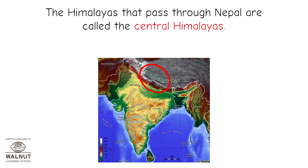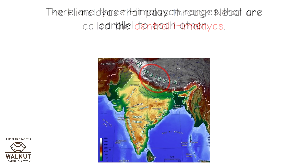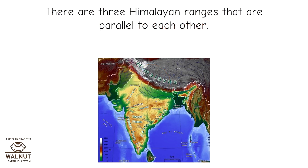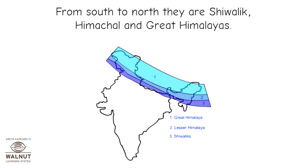The Himalayas that pass through Nepal are called the Central Himalayas. There are three Himalayan ranges that are parallel to each other. From South to North, they are Shivalik, Himachal, and Great Himalayas.